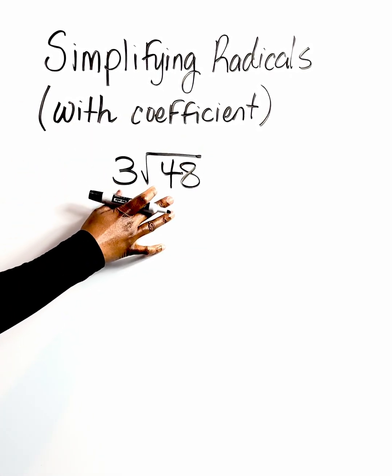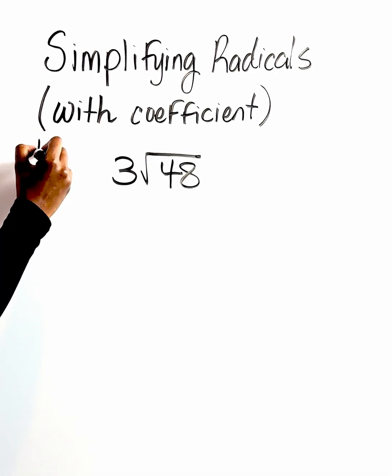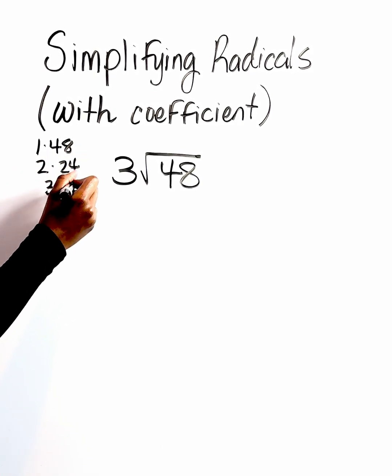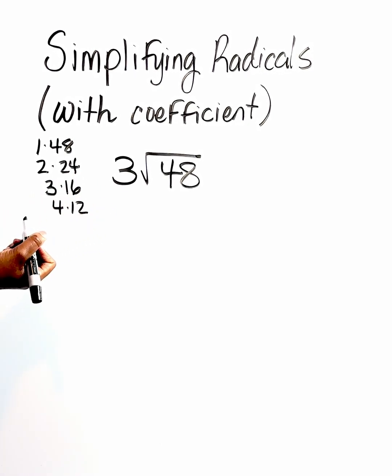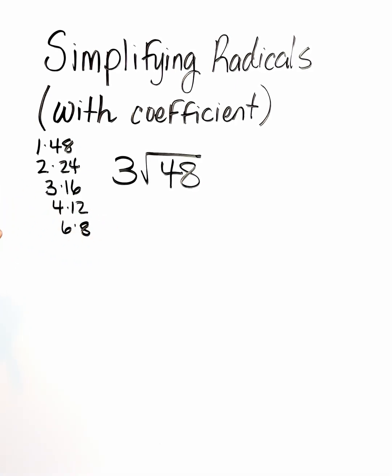So we have three root forty-eight. We're going to simplify this now. So first things first, we're going to list our factors. We have one and forty-eight, two and twenty-four, we have three and sixteen, four and twelve, six and eight. And I think that's it.